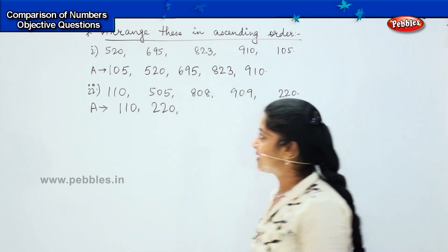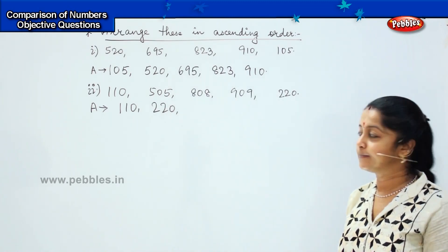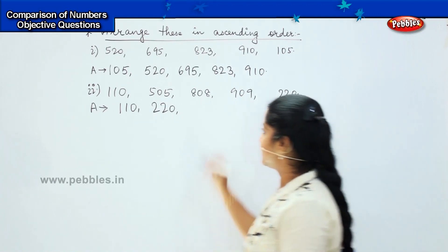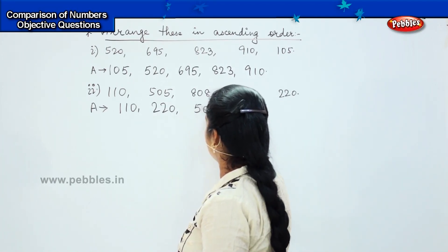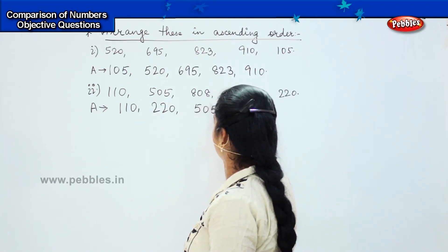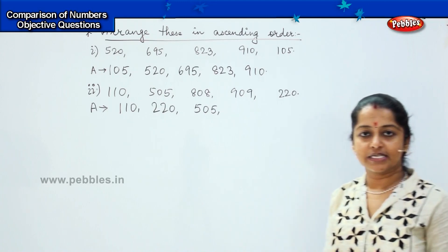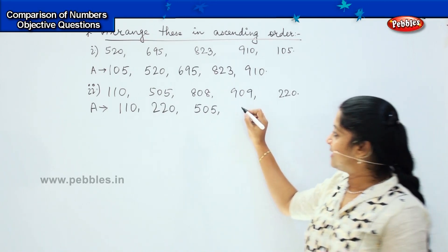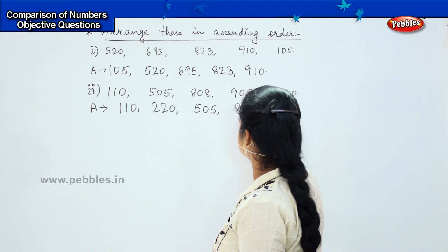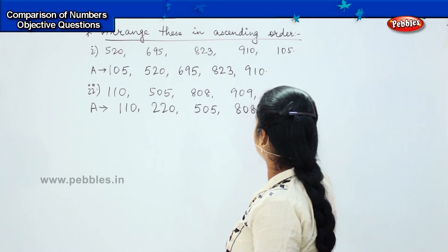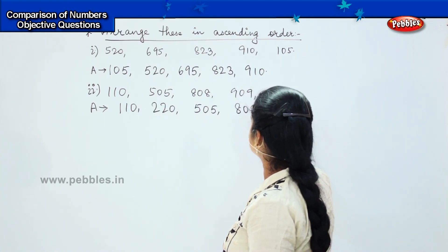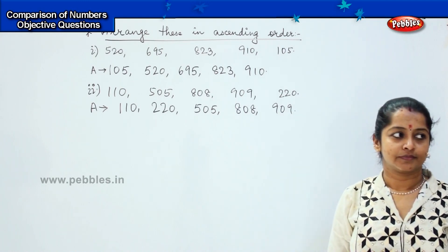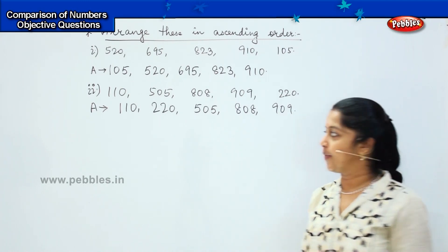What is the next number after 220? It is 505. After that, what is the next number? It is 808. Finally, it is 909. Clear?